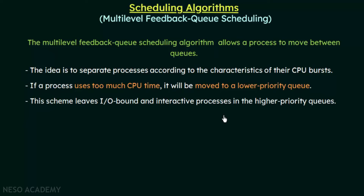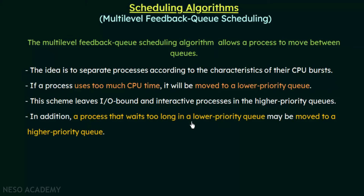This scheme leaves IO-bound and interactive processes in the higher priority queues. We know that input-output bound operations and interactive processes belong to higher priority queues, and they are processes that will not be taking up very long time. If you have not watched the previous lecture on multi-level queue scheduling, I recommend watching it first because multi-level feedback queue scheduling is like an extension of it. In addition, a process that waits too long in a lower priority queue may be moved to a higher priority queue.